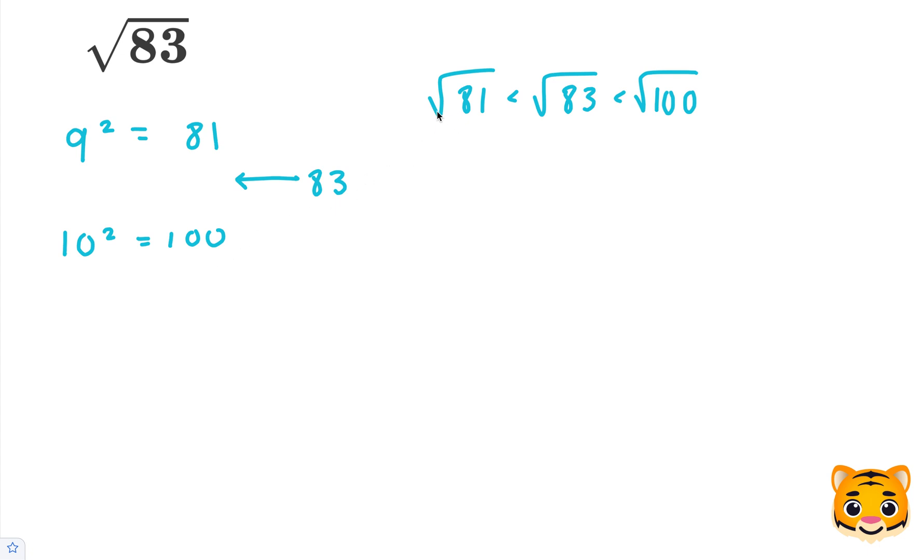Now we can simplify. The square root of 81 becomes 9, because 9 squared is 81. The square root of 100 becomes 10, because 10 squared is 100.